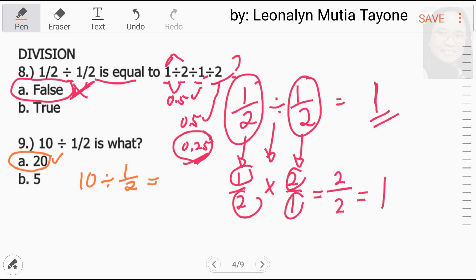Again, si fraction line ay nasa step number 1 ni order of operation or yung PEMDAS nasa P, sya, groupings. Si division nasa step number 3. So, kopyahin si 10. Si division maging multiplication. Ito yung how to divide fraction ba. Tapos, si division natin maging multiplication. At itong divisor na one half ay yung reciprocal niya 2 over 1.